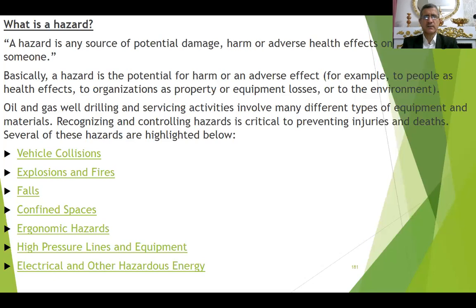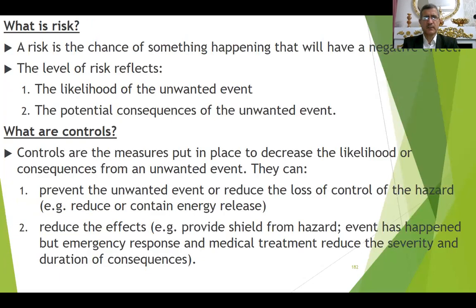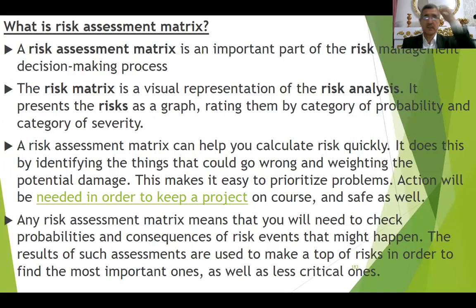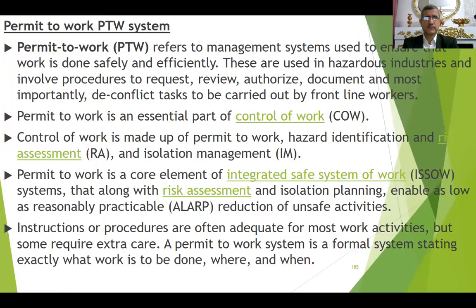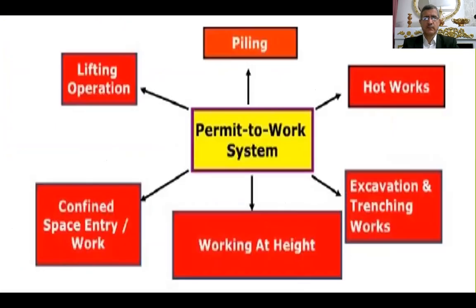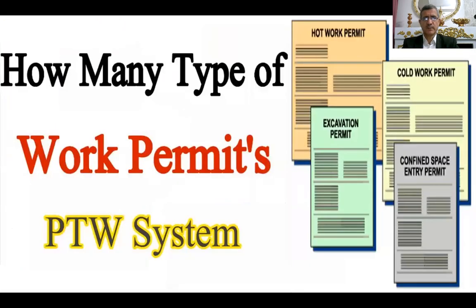What is hazard? We'll take an example. What is risk? What are controls? Then risk assessment matrix — it has a green area, a red area, and between them a yellow area. Permit work system — without it we cannot work on any well. The types of permit work system.